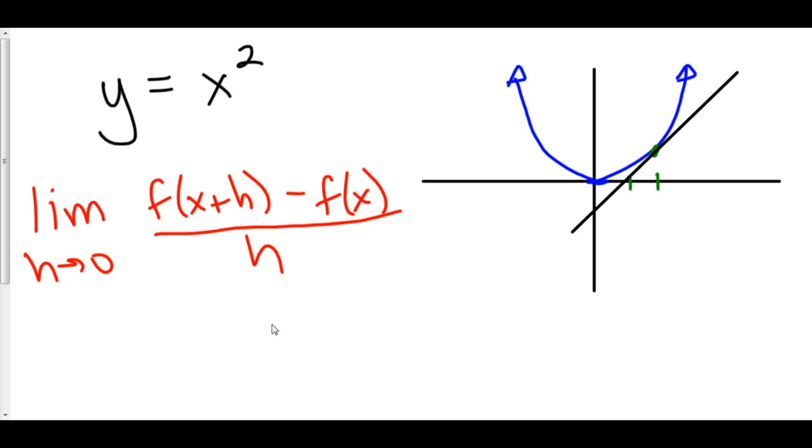Let's use the definition of the derivative to find the derivative of y equals x squared. Well, our function here is x squared. So, what this is first telling us to do is plug x plus h into x squared. So, here we go.